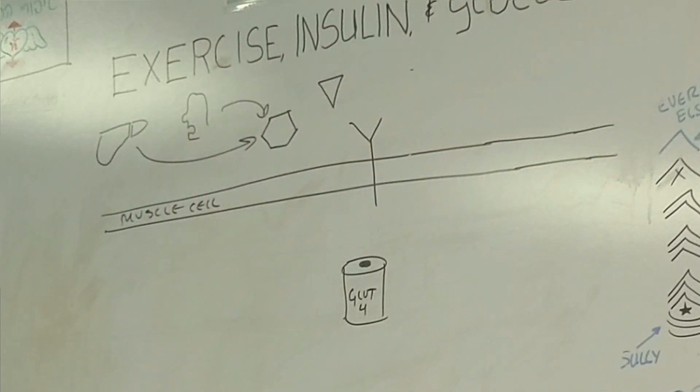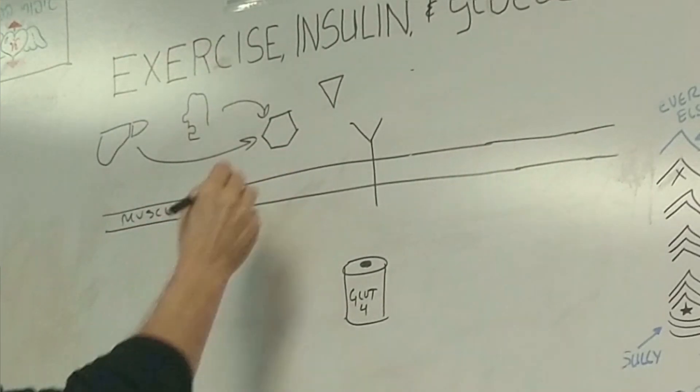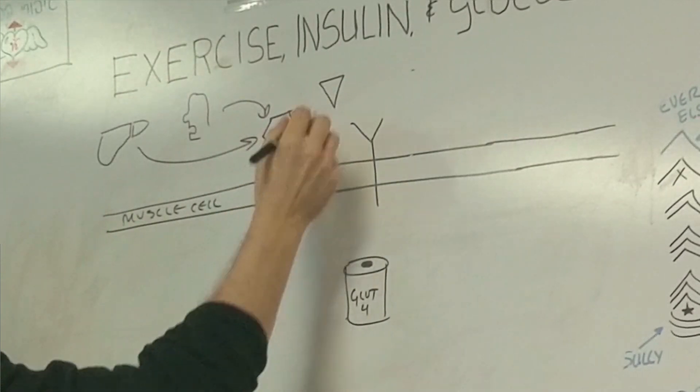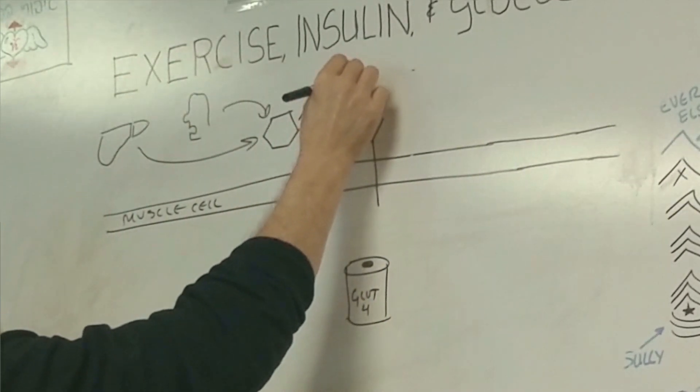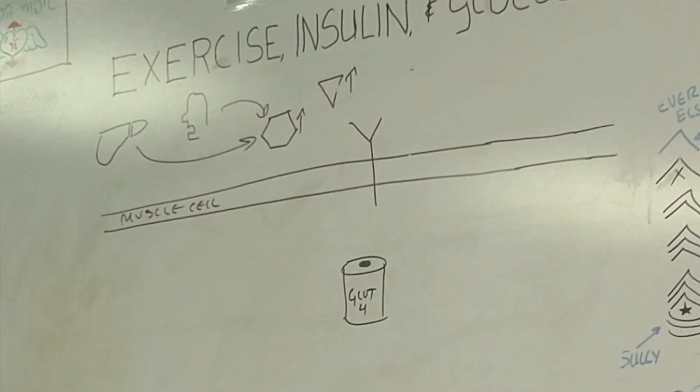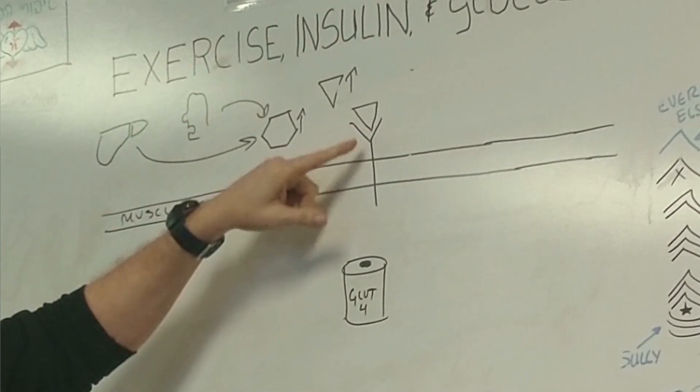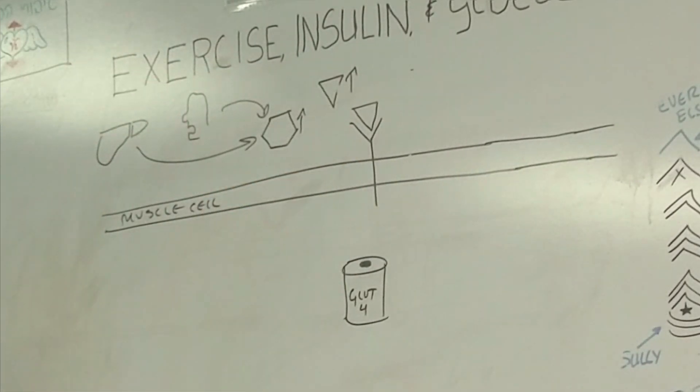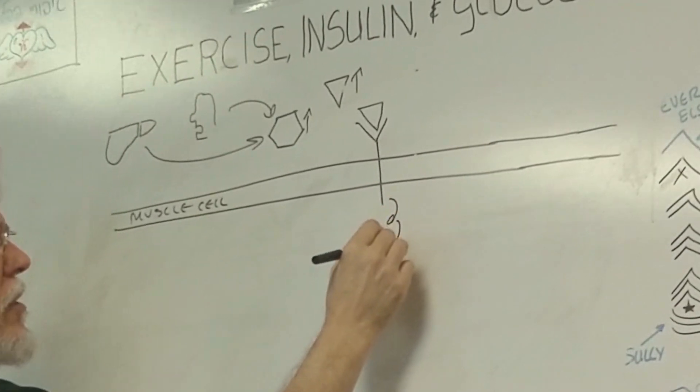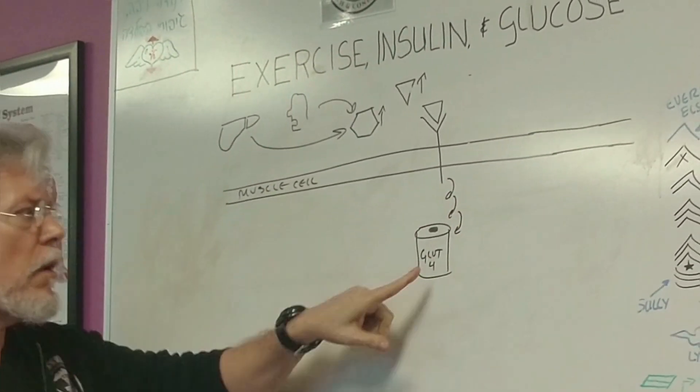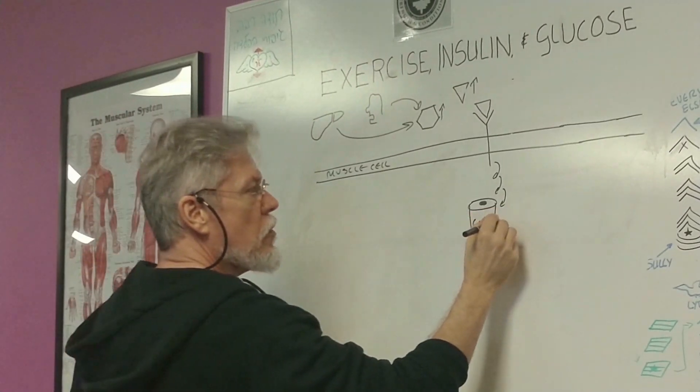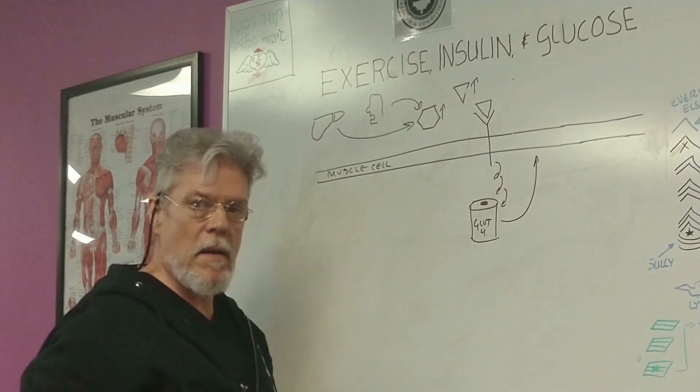During an increase in blood glucose, there'll be a corresponding increase in insulin here, this little triangle molecule. And insulin will bind to the insulin receptor, which is shown here. The insulin receptor spans the muscle cell membrane and it sends a complex signal through multiple pathways to the GLUT4 protein, causing it to translocate to the muscle cell membrane.